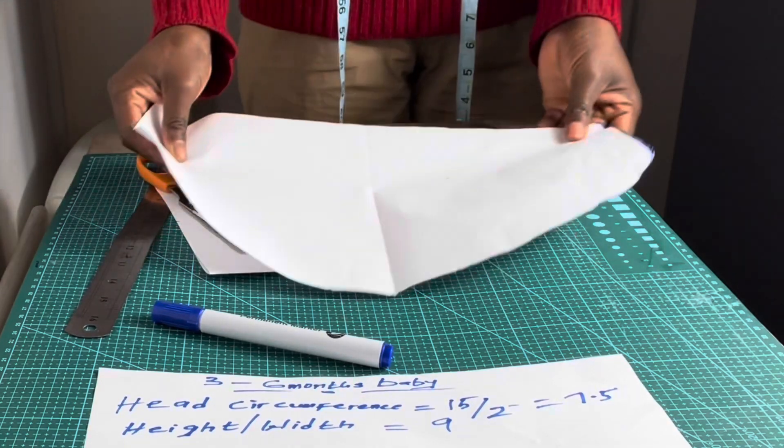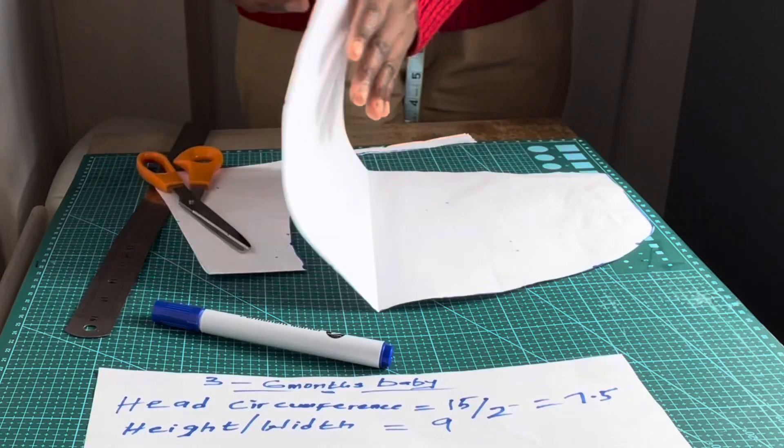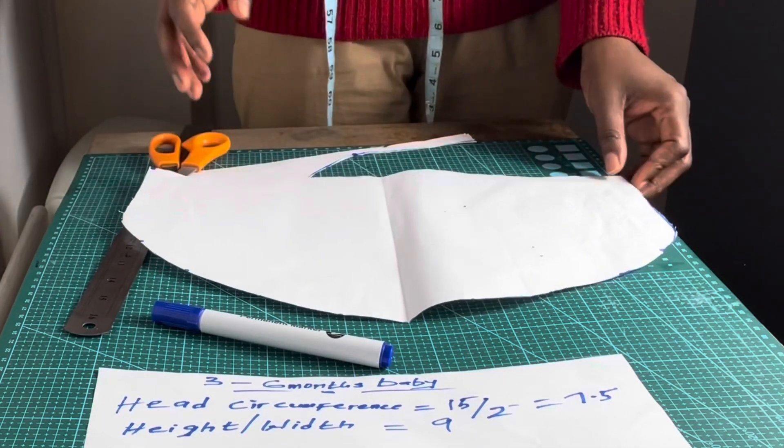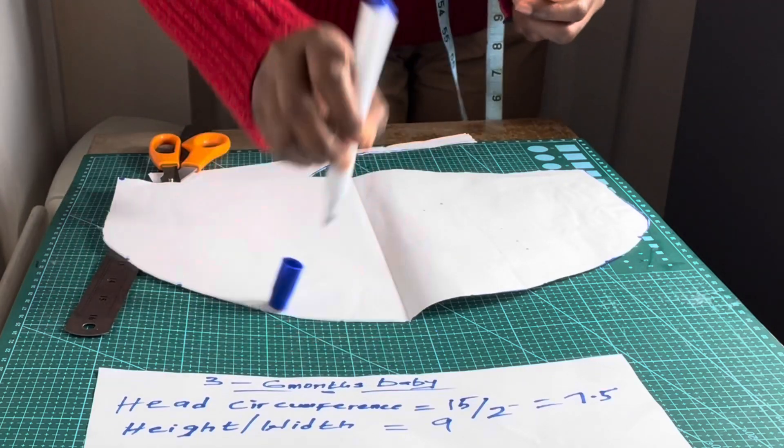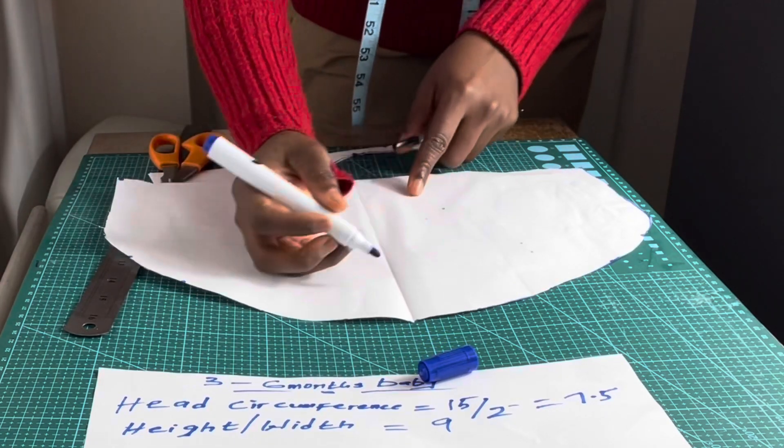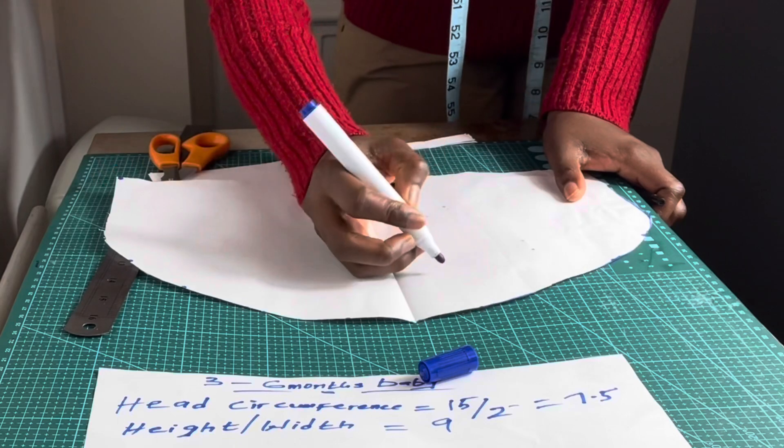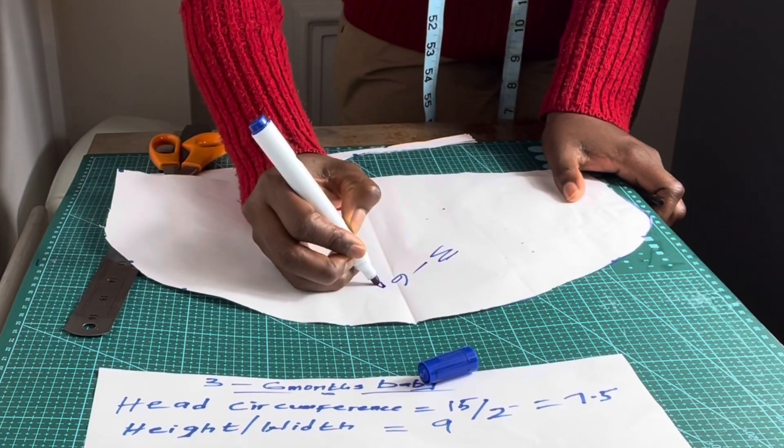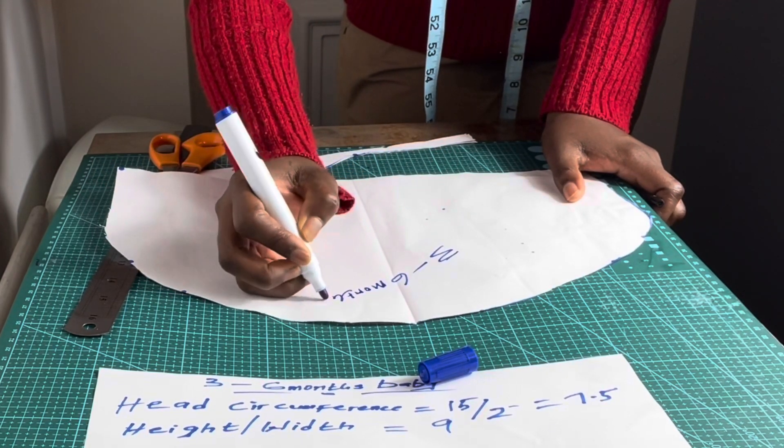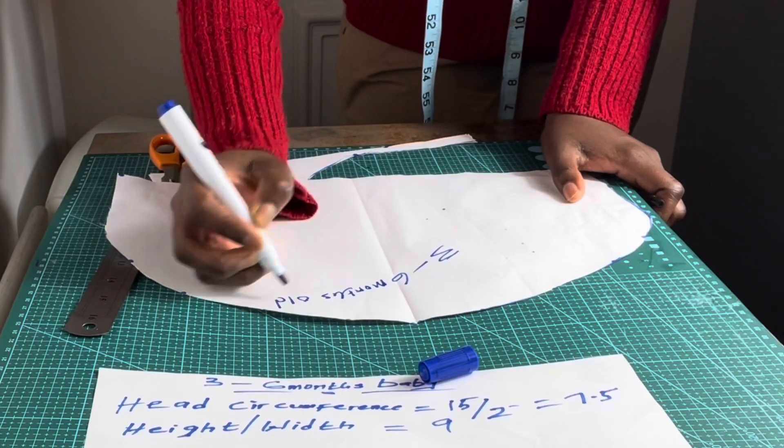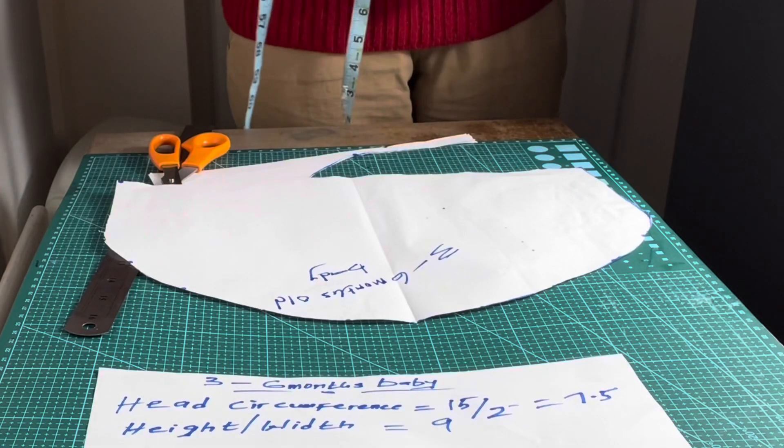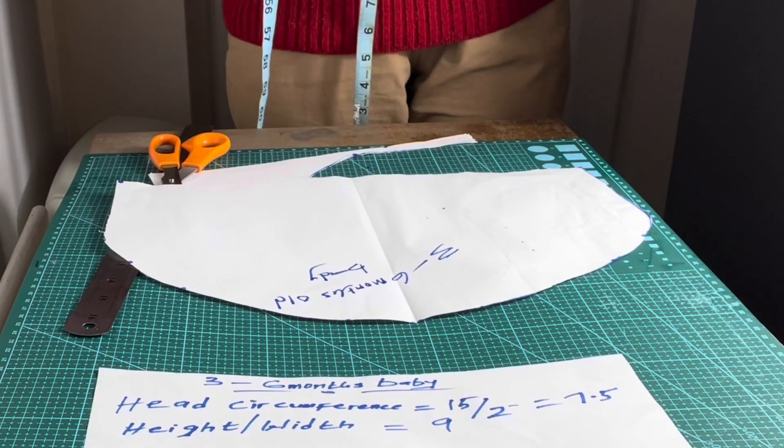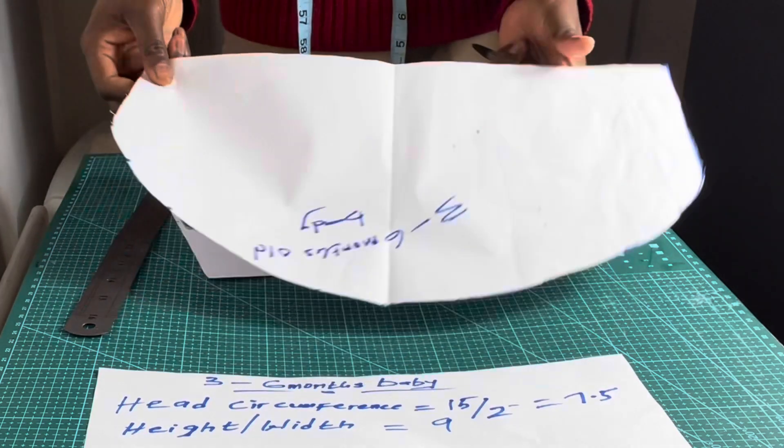That is it guys, there you go. Now you have your pattern. Remember this pattern is for a three to six month old baby. That is how to draft your pattern quickly, it's very easy.